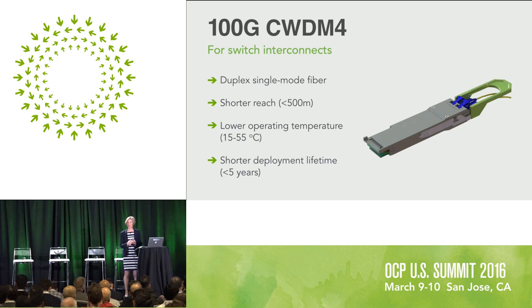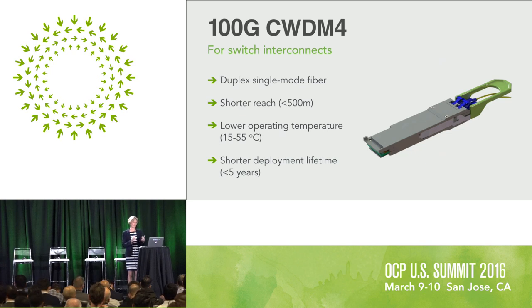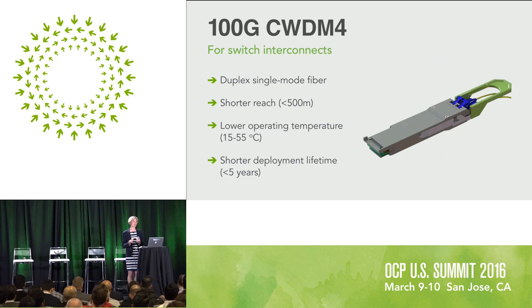The second parameter we tailored to our environment is the operating case temperature. Most of these links go inside a building that Facebook owns, and it can't get too hot inside a data center since real people need to go in there occasionally. Having a case temperature range of 15 to 55 degrees C is something we maintain anyway — so why not specify that from the beginning? Since most parameters are temperature-dependent, this significantly reduces the parameter space that the product needs to perform over.